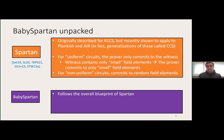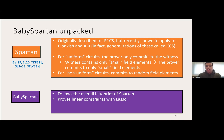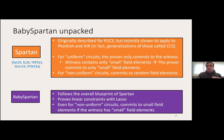Baby Spartan was designed to address exactly this problem: even for non-uniform circuits with no structure, we want the prover to commit only to witness elements. If the witness contains small field elements, the prover's commitment cost is proportional to committing to small field elements. We follow the same blueprint as Spartan's IOP, with the main difference being the use of the lookup argument Lasso to prove linear constraints. The overall result is that even for non-uniform circuits, the prover ends up committing only to small field elements.